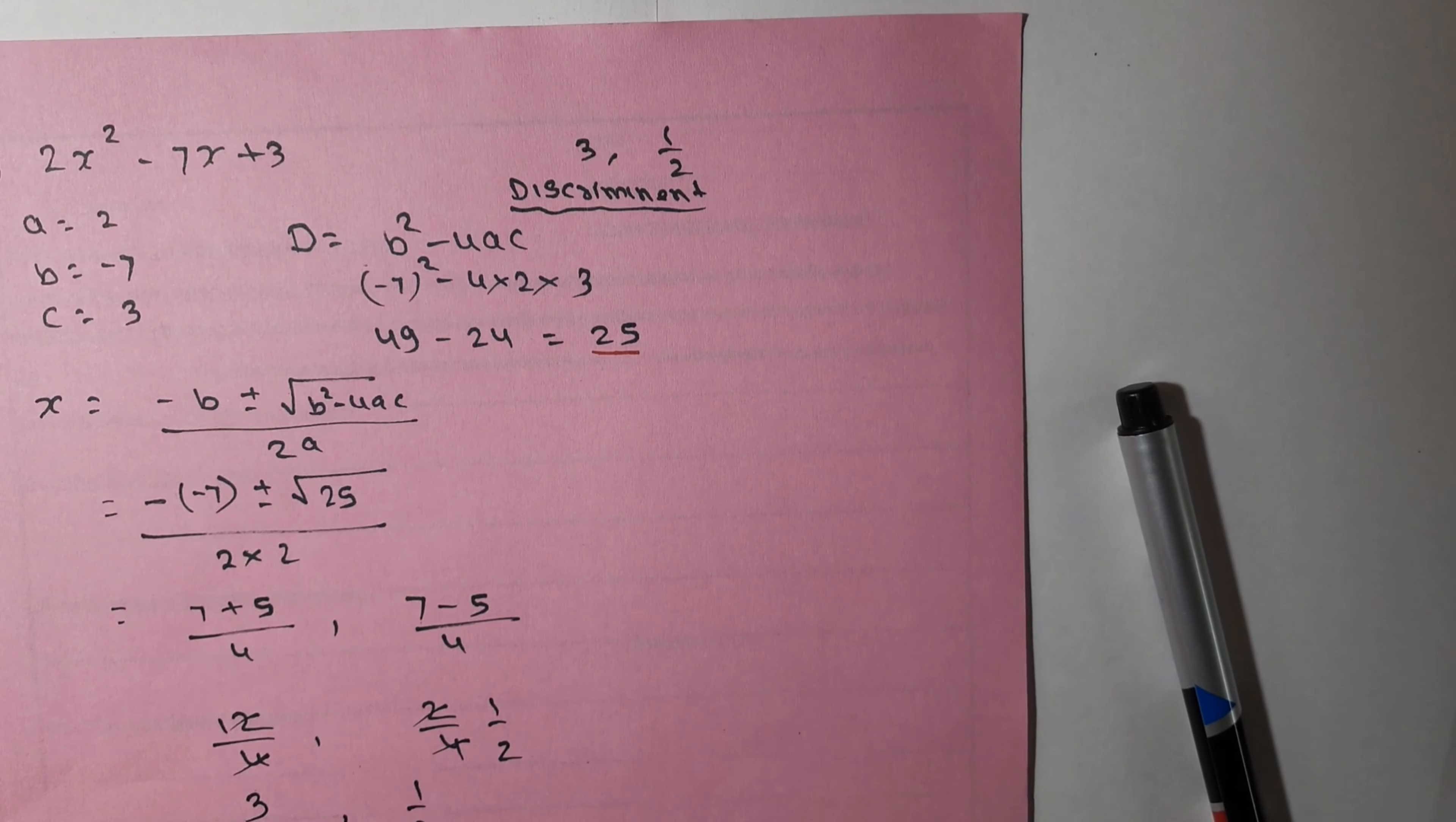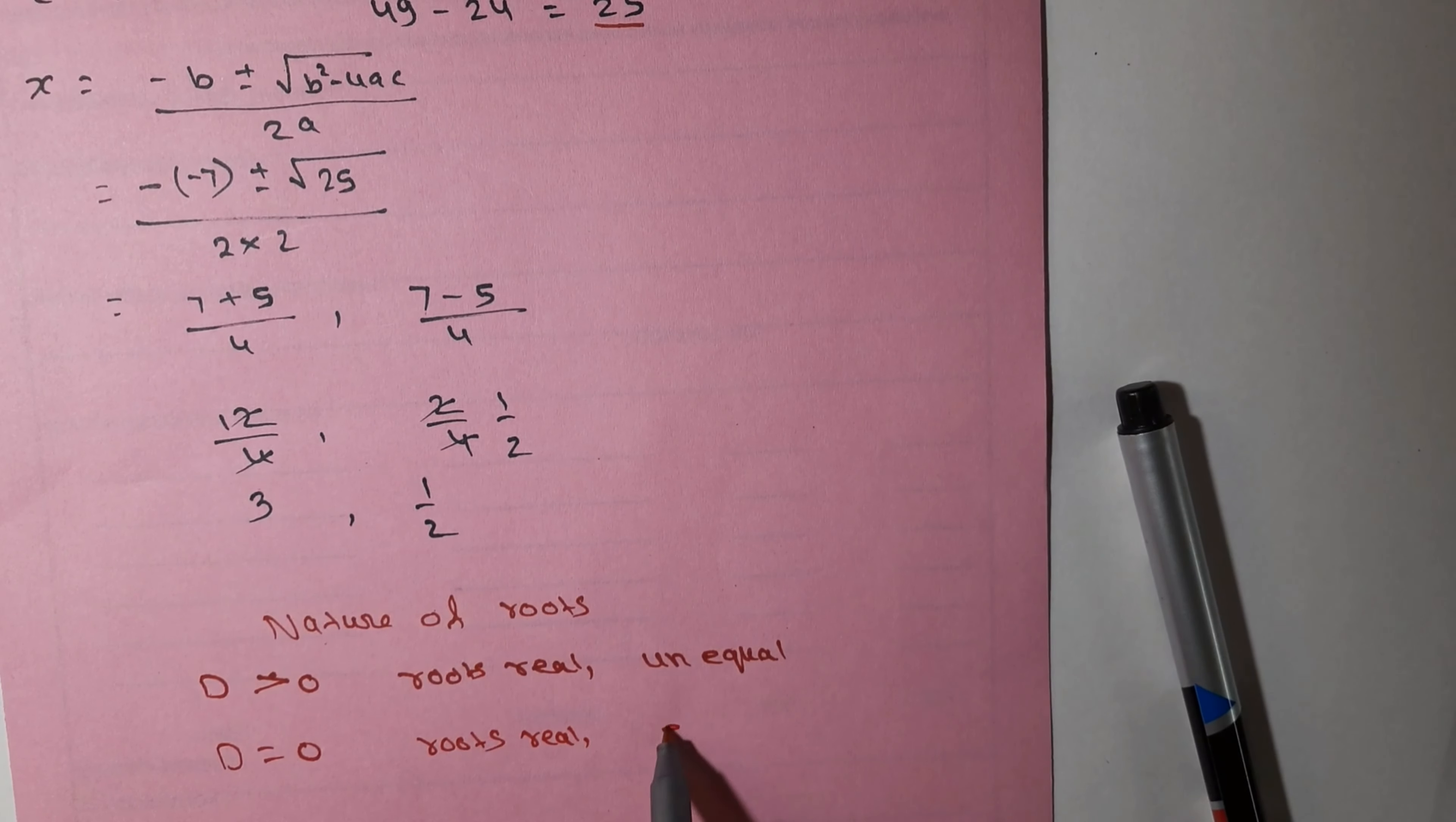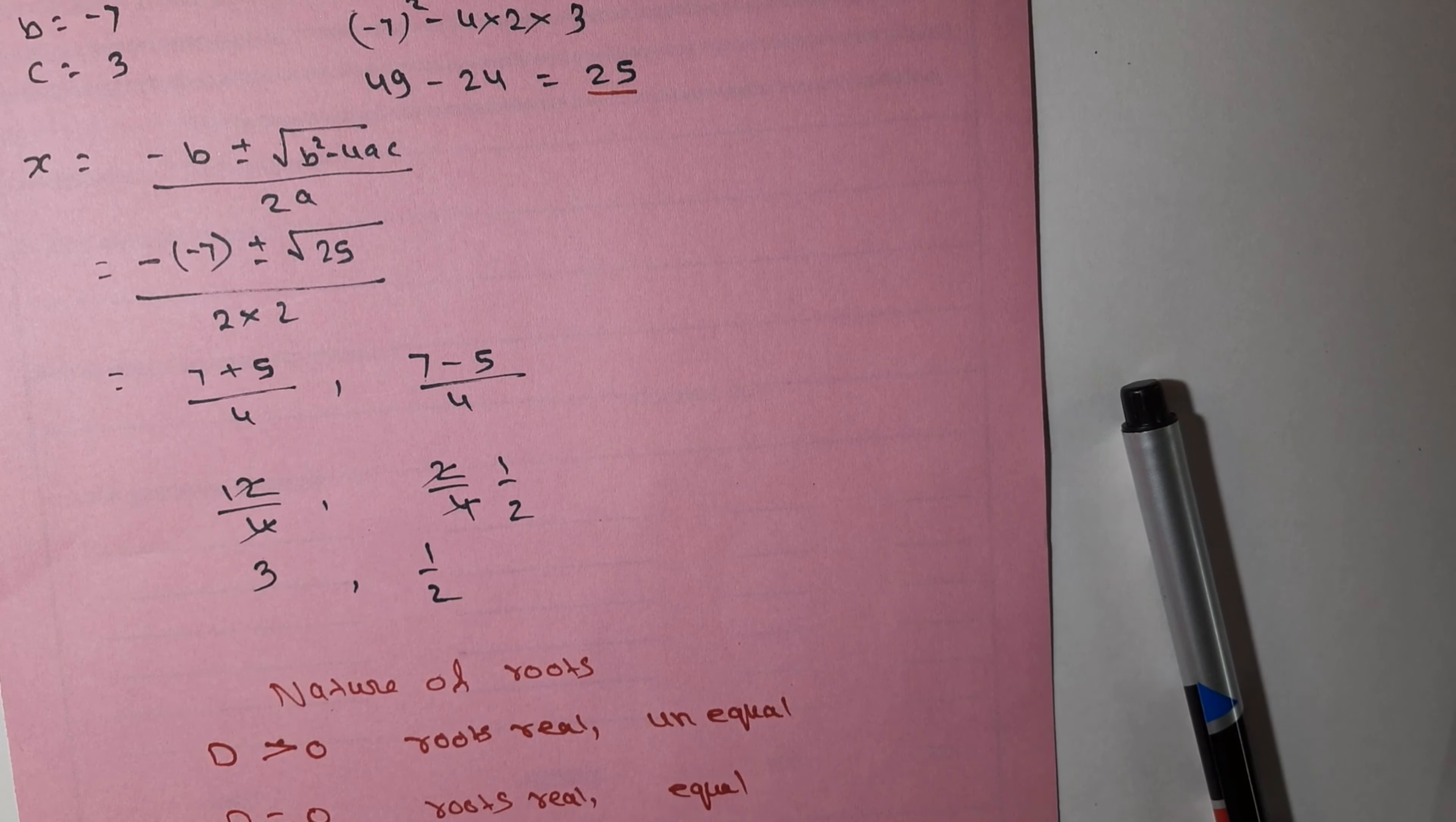Suppose here instead of 25, we got 0. If D = 0, then here also, if 0 comes, everything becomes 0, then here 3 would come, here also 1/2 would come, here also 1/2. In any equation, if the discriminant is 0, the roots remain equal. This is the identification. So what should we write? When D = 0, roots are real and equal.